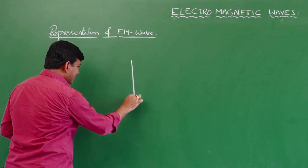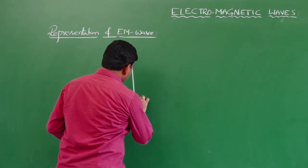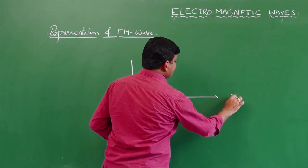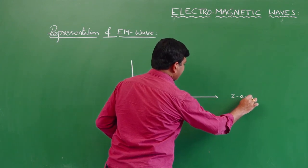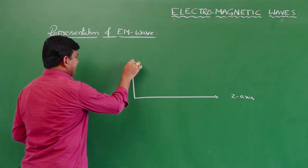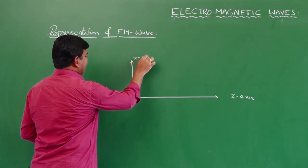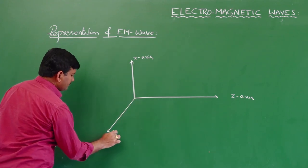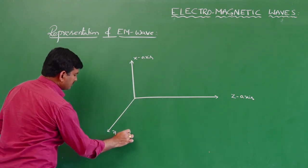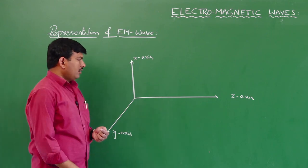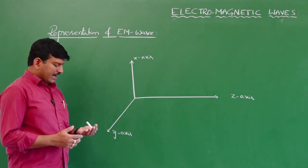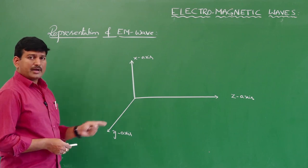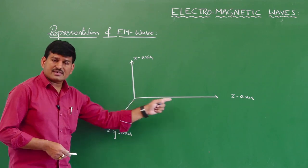Graphically, let us consider an electromagnetic wave propagating along the positive z-direction. Let us consider this is the z-axis, this is the x-axis, and this is the y-axis. The wave is considered to be propagating along the positive z-axis.